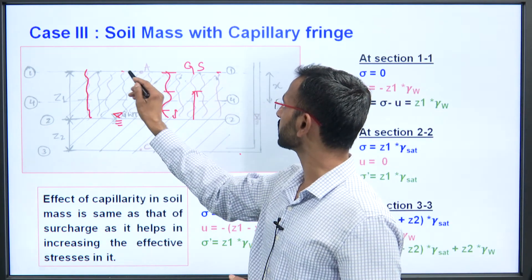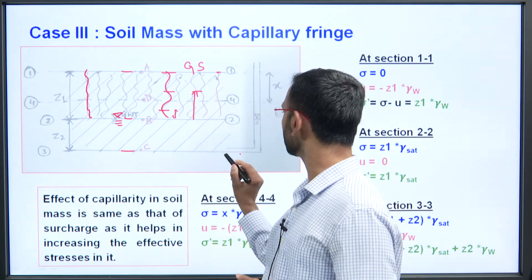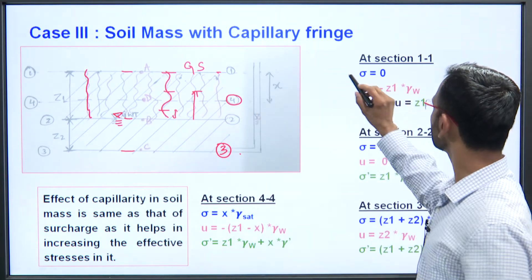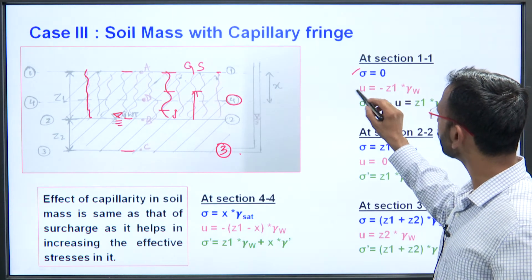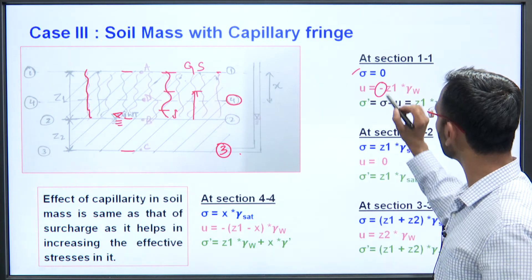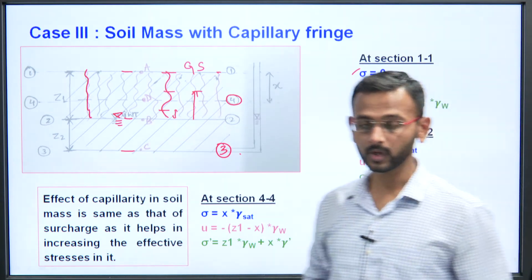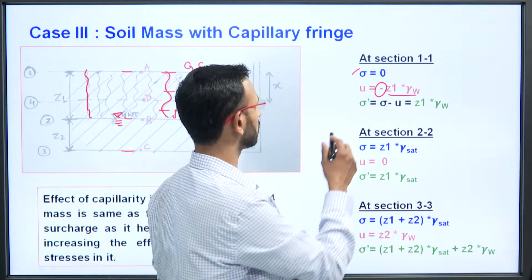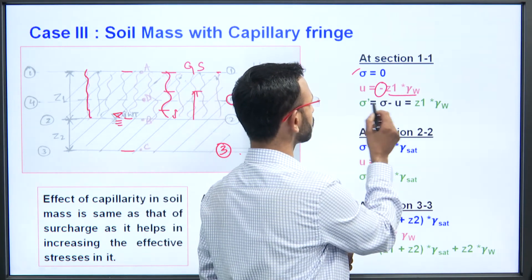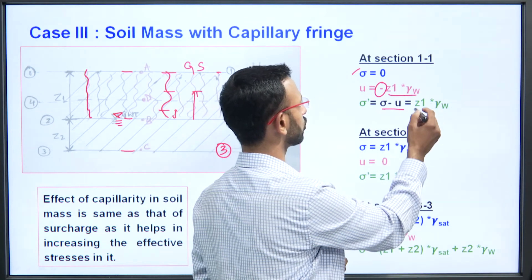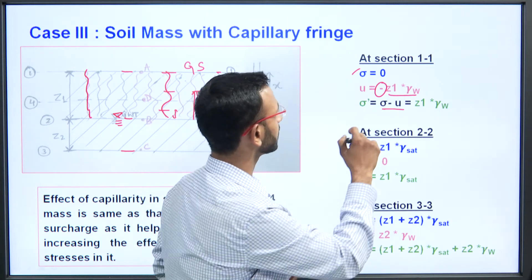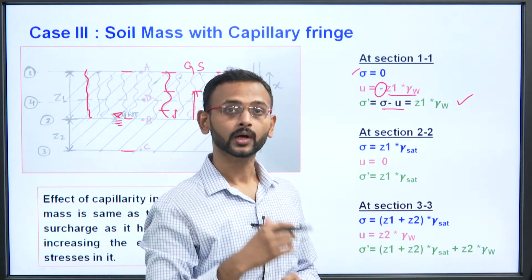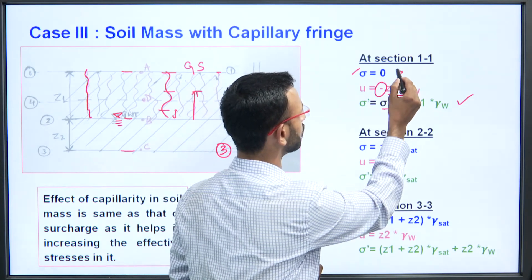We will discuss sections 1-1, 2-2, 3-3, and an intermediate section 4-4 where capillarity exists. At point A (section 1-1), total stress is 0 and pore water pressure is minus z₁ × γ_w because the water is held in tension — not the usual case with a groundwater table, hence the negative sign.